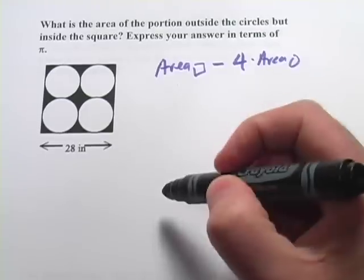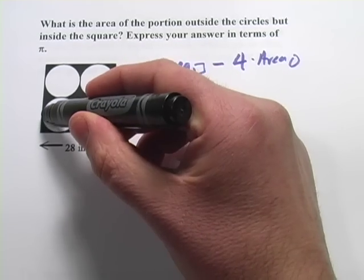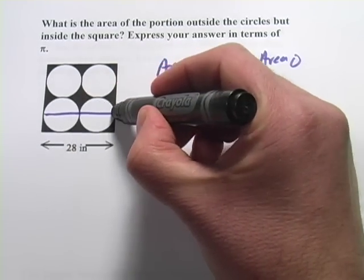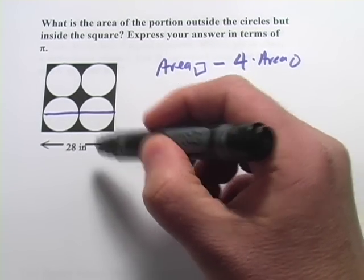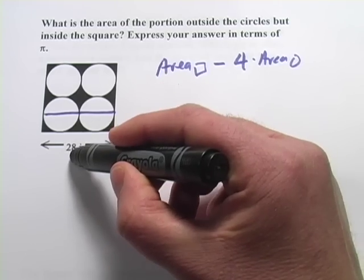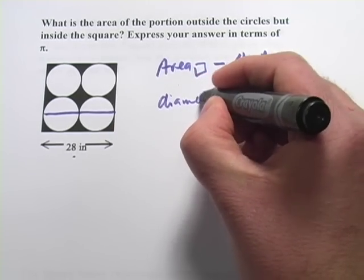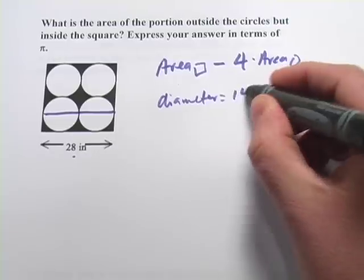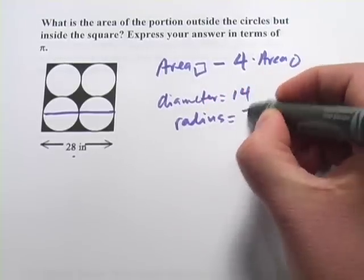So we're going to need to know what the radius of one of these circles is. And what you can see is since two circles side by side fill up that whole length of 28, what that says is that two diameters is 28. So a single diameter would be half of that or 14. So a radius would be half of that or 7.